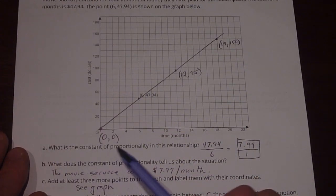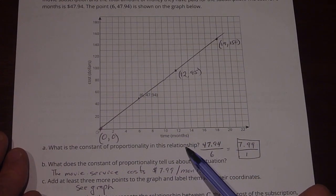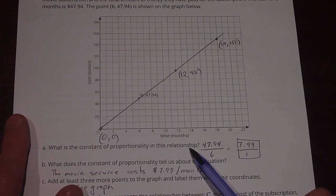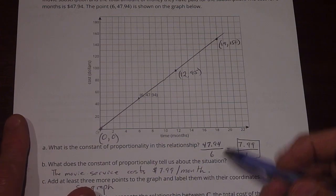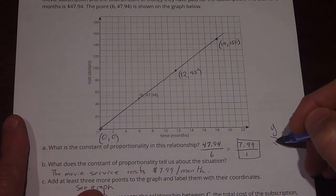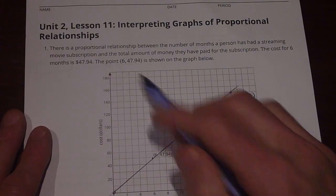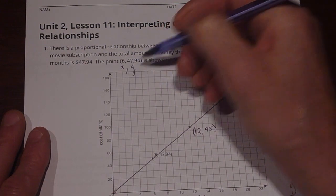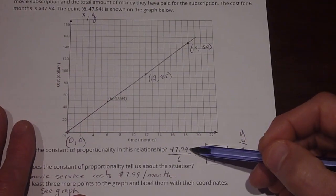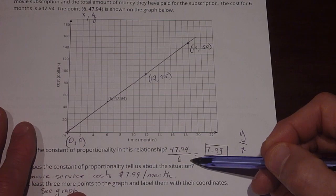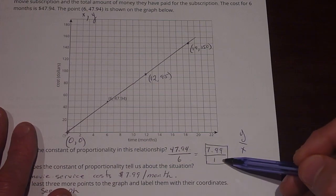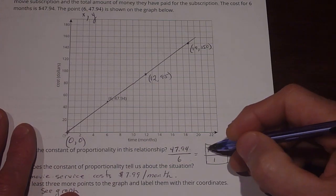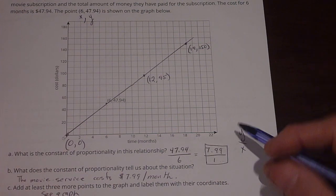Part A says, what is the constant of proportionality in this relationship? Well, we know that the constant of proportionality is equal to Y divided by X. So in this case, in our point of 6 comma 47.94, this is X comma Y, so we do 47.94 divided by 6, and that equals $7.99 per one month. So that's $7.99 for every month.